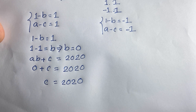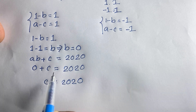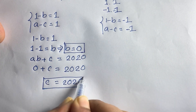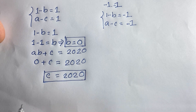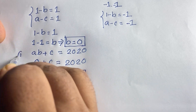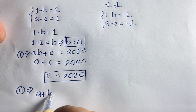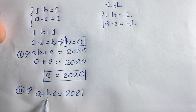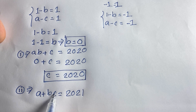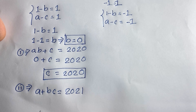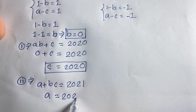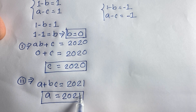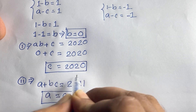Now we need the value of a. Using the second equation, a + bc = 2021, with b = 0 and c = 2020: 0 times 2020 is 0, so a equals 2021. Therefore in Case 1: a = 2021, b = 0, c = 2020.